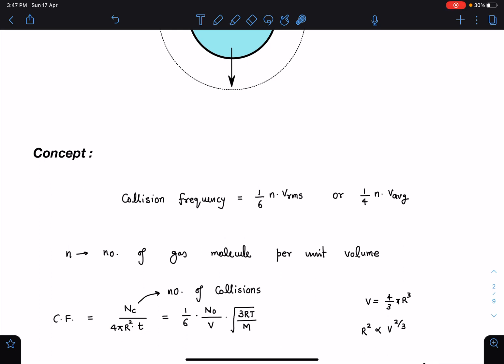So here I can write this collision frequency as number of collisions per unit area per unit time, N_c divided by 4 pi r square t, and that should equal 1/6 n, that is number of molecules per unit volume, so n_not by V. I'm using v_rms here, otherwise you can use v_average also. In the end, both are proportional to temperature, so it doesn't make any difference to the final answer.